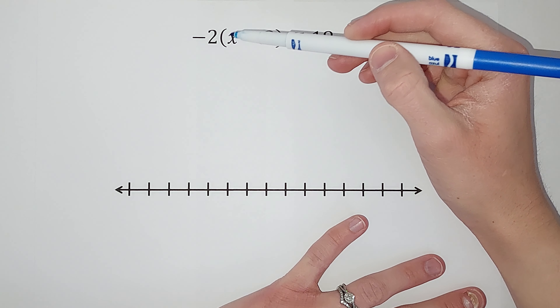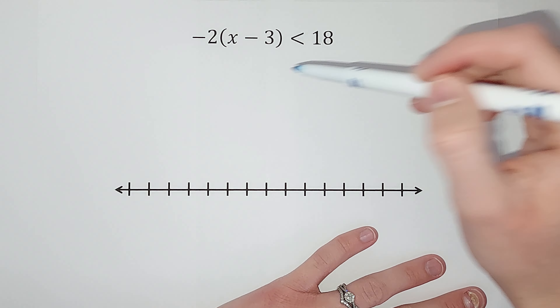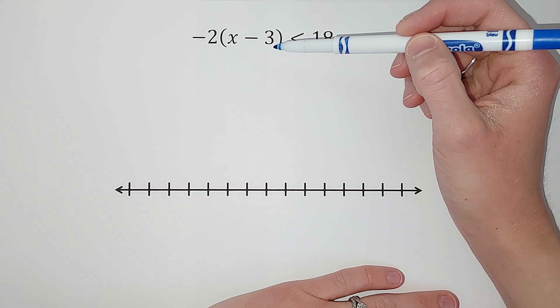We are going to solve this inequality and then graph it on this number line. My whole goal is to get x by itself — I want to know what numbers can be plugged in for x to make this statement true. We have a less than sign here, but while solving it, we can treat this basically like an equal sign. There's just one exception to that rule that we'll talk about when it comes up.